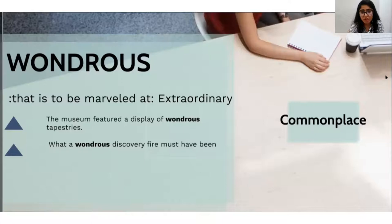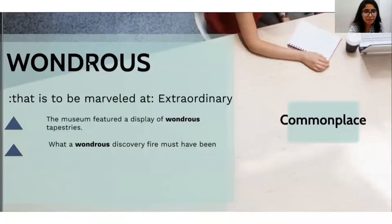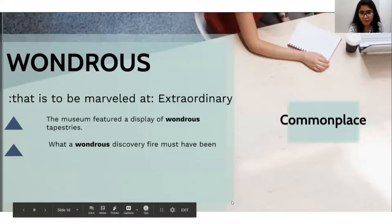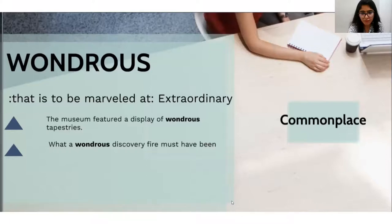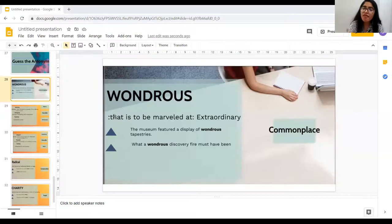Now we'll be moving towards some amazing antonyms. You have to guess the antonym, and I'll be discussing the word with you. The first word we have is 'Wondrous.' What do you mean by wondrous? It means that is to be marveled at, or something which is extraordinary. For example, 'The museum featured a display of wondrous tapestries,' or 'What a wondrous discovery fire must have been.' The antonym is 'commonplace.'